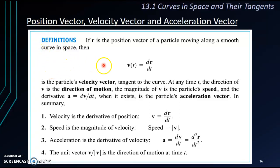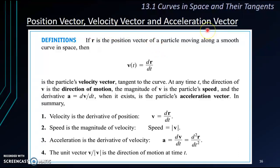To describe a motion of a particle, we usually use a position vector, velocity vector, and acceleration vector. We use r to represent a position vector, whose starting point is always the origin.